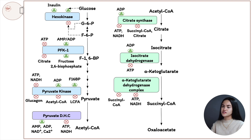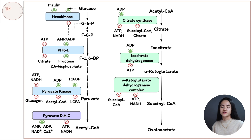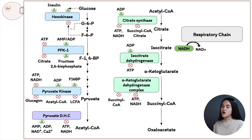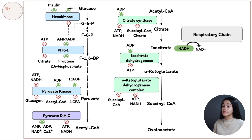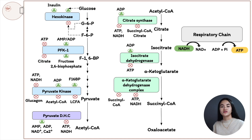From glycolysis and the citric acid cycle, we produce and capture electrons in the form of NADH and FADH2. These electron carriers donate their electrons to the electron transport chain, where they are accepted by the final electron acceptor, oxygen. Oxidative phosphorylation yields the most ATP aerobically. So now let's get into how the cell regulates this — how does the cell regulate ATP concentration?